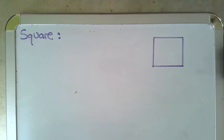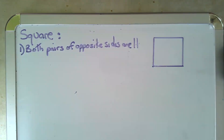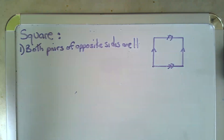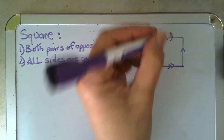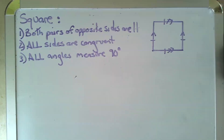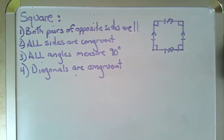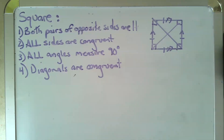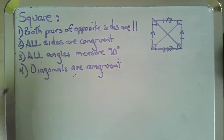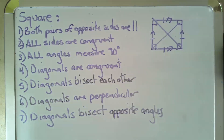Now let's take a look at squares. A square has many properties similar to a rhombus, a rectangle, and a quadrilateral. Both pairs of opposite sides are parallel, and all four sides are congruent, just like a rhombus. All angles measure 90 degrees. This time, diagonals are congruent, and all the same information about diagonals in a rhombus applies: the diagonals bisect each other, they are perpendicular to each other, and they bisect the opposite angles. This is a good place to take a screenshot.